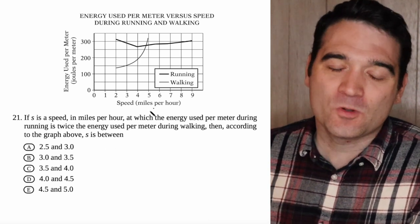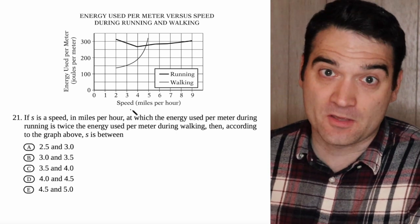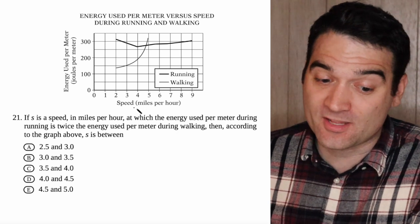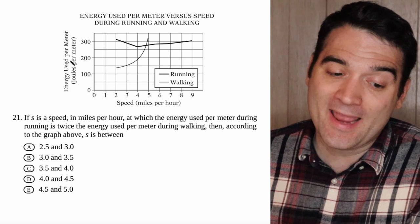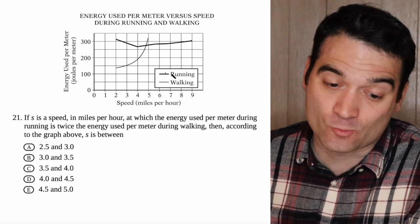So what's most important on data analysis is that you understand the graphs that they're giving you. And to do that, you need to read the axes here. So the x-axis is the speed that we go in miles per hour, and the y-axis is the energy we use at that speed. And we have two cases, running and walking.